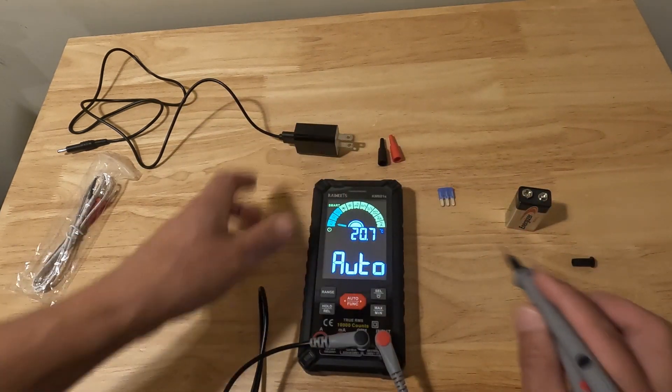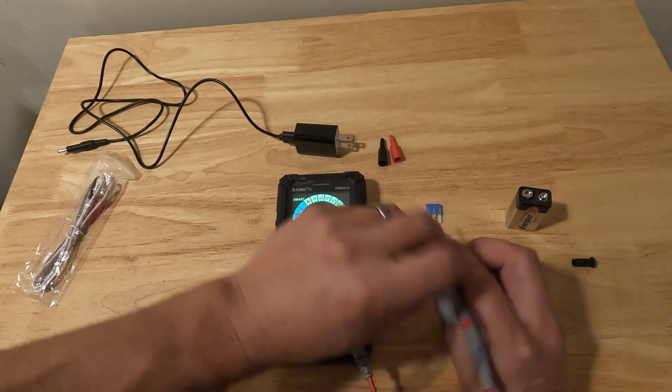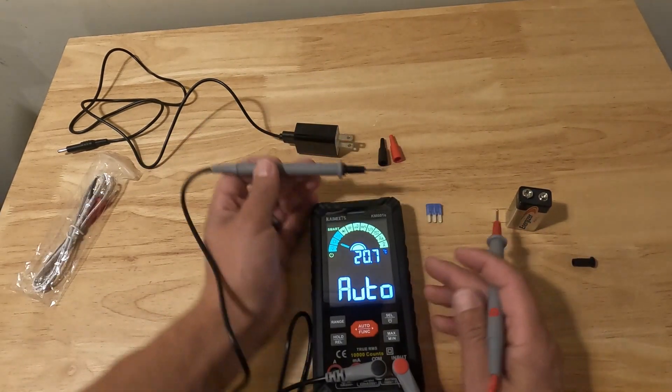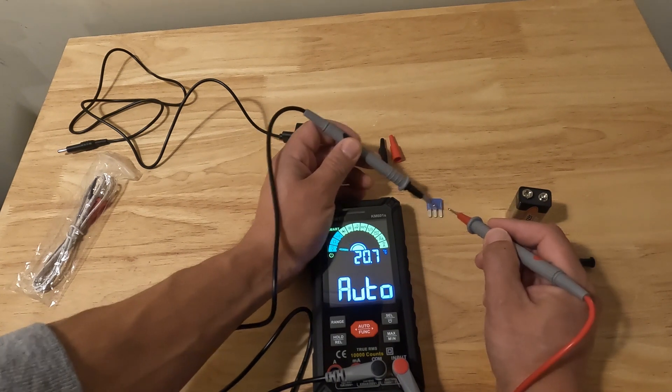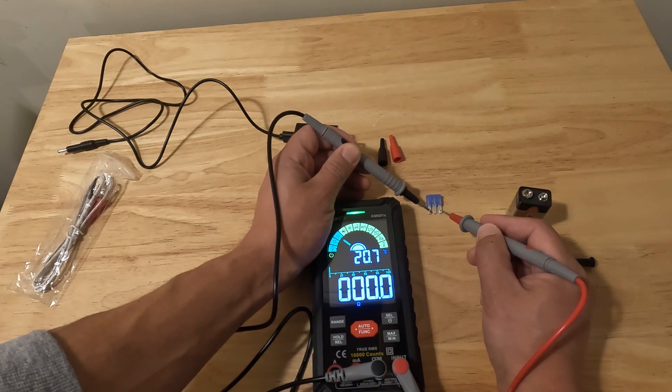We haven't even switched any dials, we haven't done anything. This is all in auto mode. So now we're going to jump right to testing our fuse to see if we have continuity, to see if our fuse is good. If we have continuity it'll beep. You can see we have continuity in our fuse.